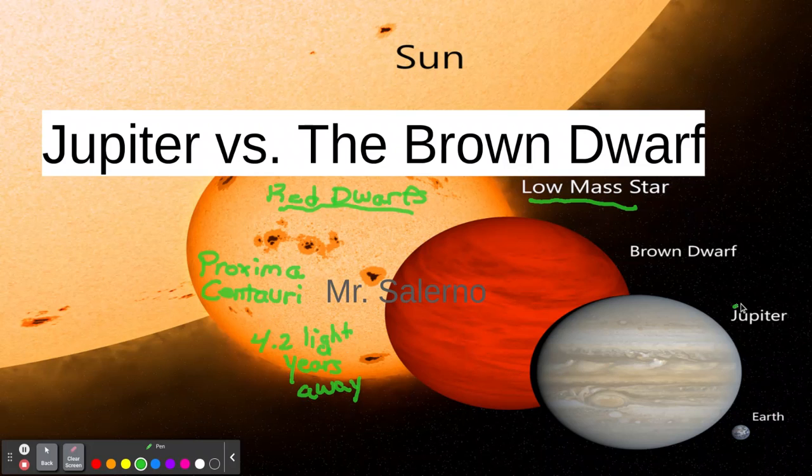And over here, of course, we have Jupiter, our largest planet. And then we have a brown dwarf. And let's call this, we're going to call it Gliese. We'll call it Gliese, because that was the first brown dwarf that they discovered. All right, so far, so good.